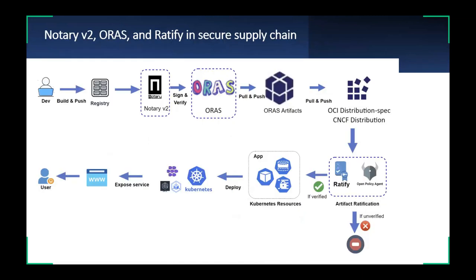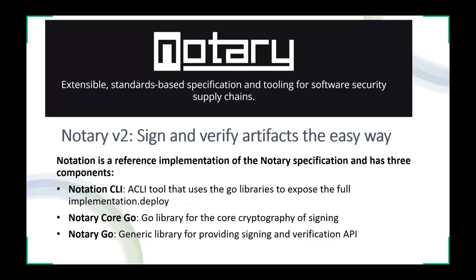Taking this diagram as an example, we can introduce Notary to sign your image and generate a signature. Then we can use ORAS to promote the signed image with signature to a staging environment for deployment. Before you deploy it, you can leverage Ratify and OPA Gatekeeper to validate if the image is signed or not. We will only allow signed images to be deployed to the Kubernetes clusters and production environment.